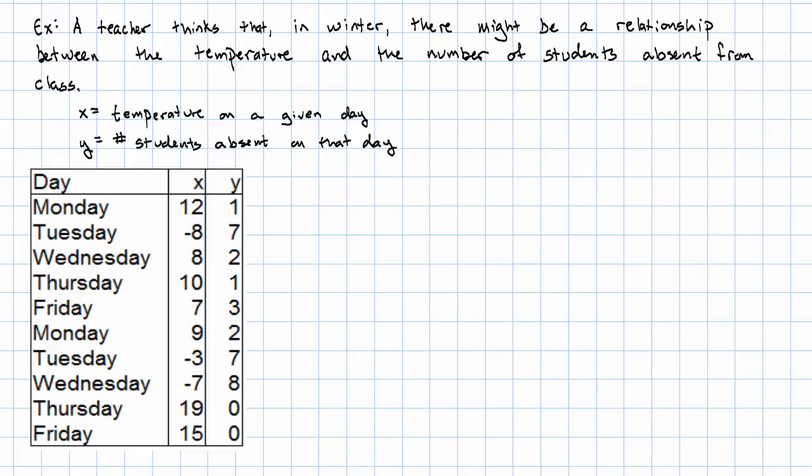It looks like on the warmer days, 15, 19, 12 degrees, we have fewer students absent. And on the really cold days, minus 8, minus 7, we have lots of students absent. How can we see this pattern more clearly? One way to make a pattern easier to see is to draw what's called a scatter plot.